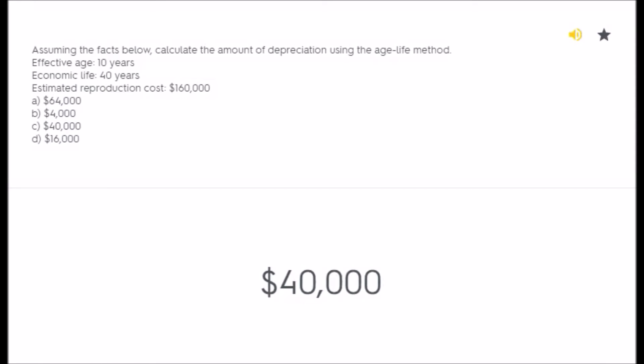Assuming the facts below, calculate the amount of depreciation using the age-life method. Effective age 10 years, economic life 40 years, estimated reproduction cost $160,000. A) $64,000, B) $4,000, C) $40,000, D) $16,000. Answer: $40,000.